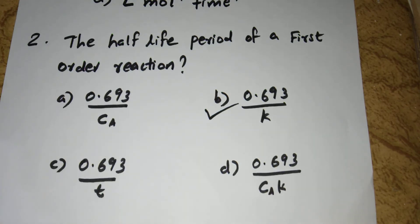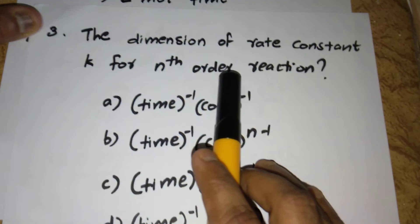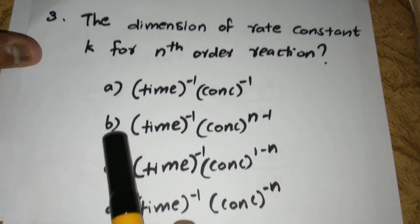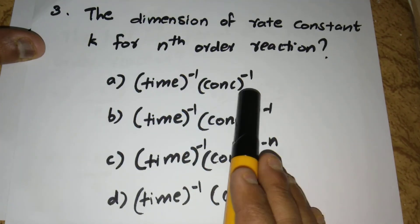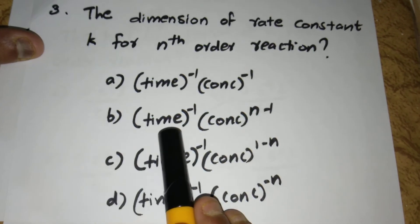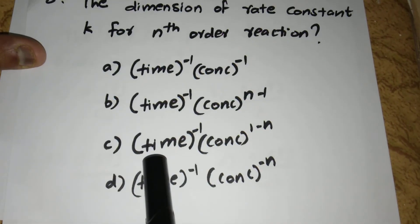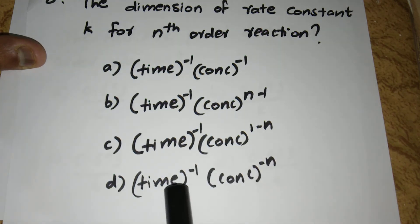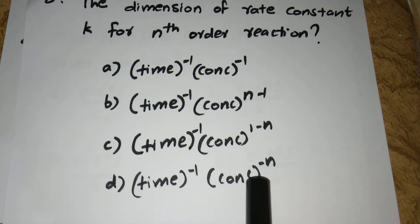Now let us discuss the third question: what is the dimension of a rate constant for an nth order reaction? Option A: time⁻¹·concentration⁻¹. Option B: time⁻¹·concentration^(n−1). Option C: time⁻¹·concentration^(1−n). Option D: time⁻¹·concentration^(−n). What is the solution?